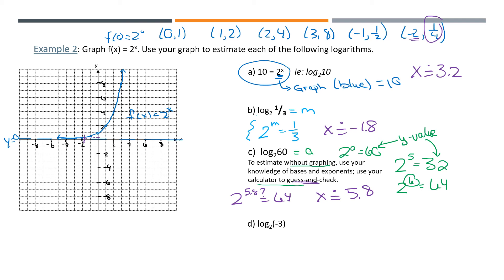D is the last one. Making this equal to r: 2 to the power of r equals negative 3. Let's look at our graph — when is our graph going to have a y-value of negative 3? My graph will never be there, so there is no answer for this question. This one is undefined.